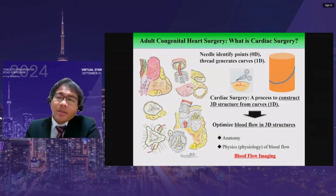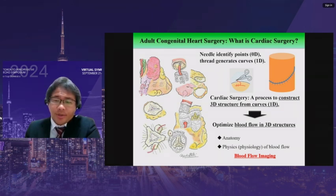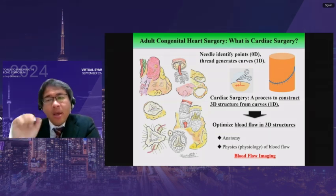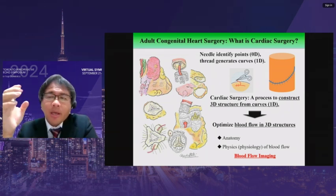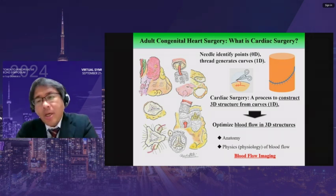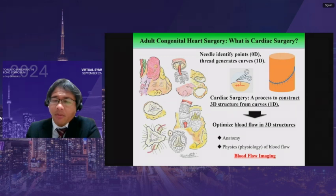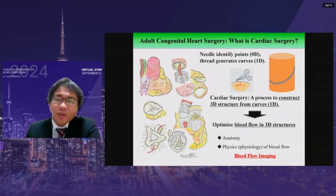This is my surgical record of a complex adult congenital heart surgery — a double root replacement after the Ross procedure — meaning aortic root re-implantation concomitant with RV-to-PA conduit. The surgeon makes a point with a needle to suture with a thread, generating 1D curves in 3D space connecting cardiovascular structures. In general, cardiac surgery is a process to construct 3D structures from 1D curves, so blood flow optimization in 3D structures is essential.